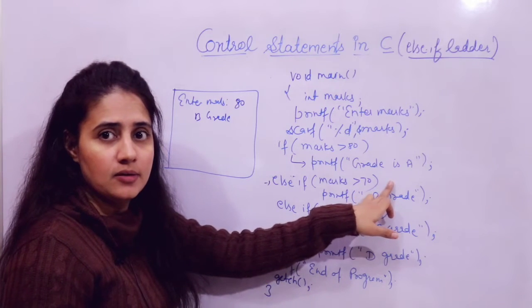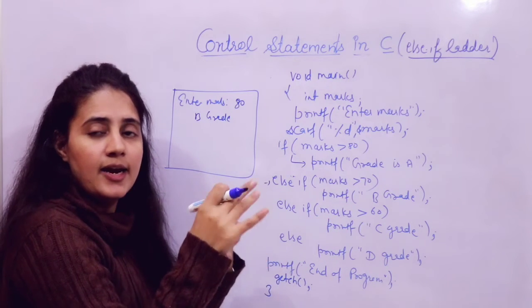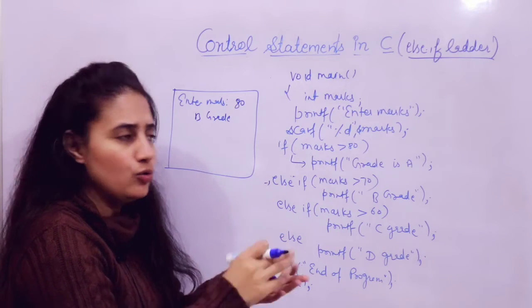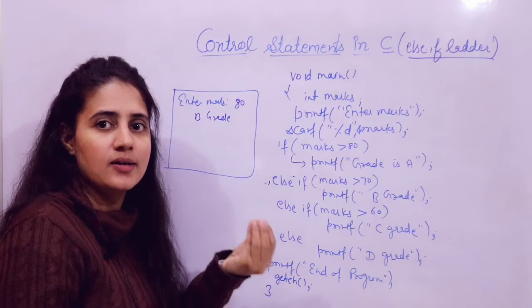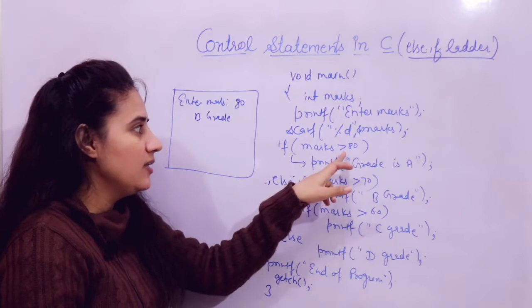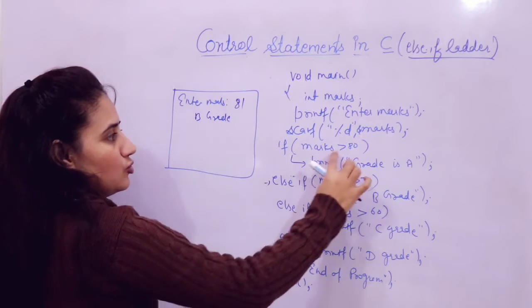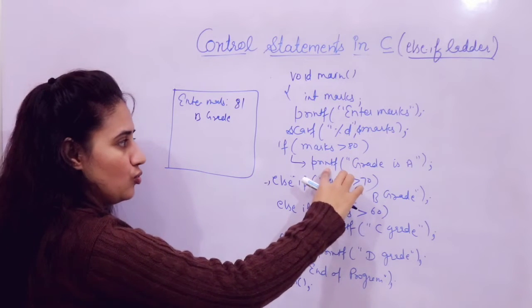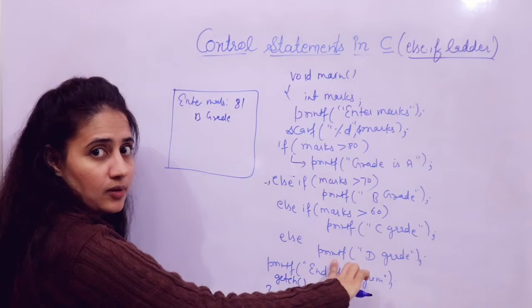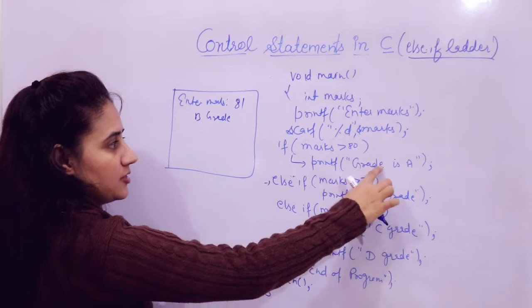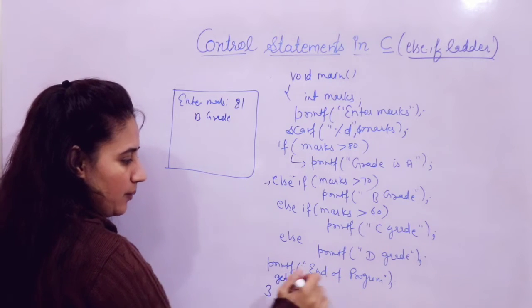You might ask: do you need to write here marks greater than 70 AND less than or equal to 80? No, you don't need that second condition. Because if marks are greater than 80, then that first block would be executed. Suppose marks are 81 — marks greater than 80 is true, so that block executes and the program skips all other statements and prints grade A, then end of program. So no need to write the redundant second condition.